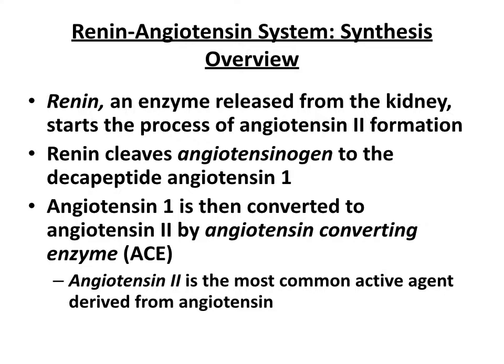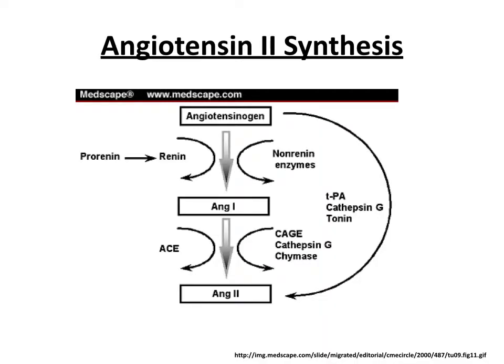What renin does is it cleaves angiotensinogen to the decapeptide angiotensin I, which then gets converted to angiotensin II by angiotensin-converting enzyme, or ACE — the enzyme that gets inhibited by ACE inhibitors. I'm going to go through this whole system; this is kind of a summary. If you know this slide and walk yourself through it, you'll at least know angiotensin II synthesis. Angiotensinogen is cleaved by renin to make angiotensin I, which then is converted to angiotensin II, the most active angiotensin.